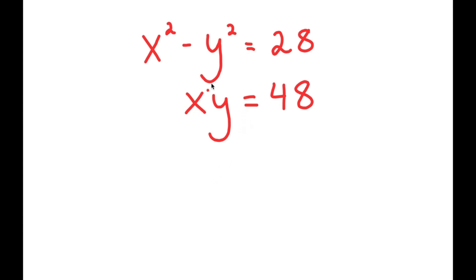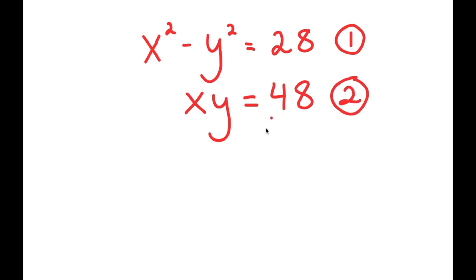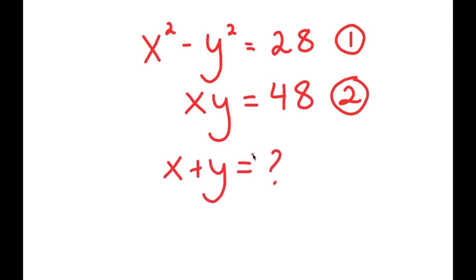In this system of equations, I have x squared minus y squared is equal to 28, and x times y equals 48. I'm given two equations — let's call this equation one and equation two. What I want to do is find the value of x plus y.